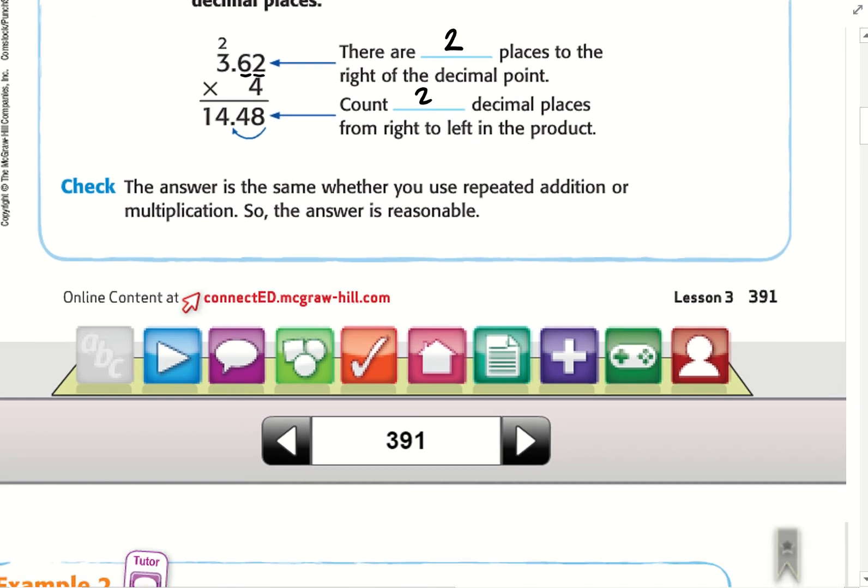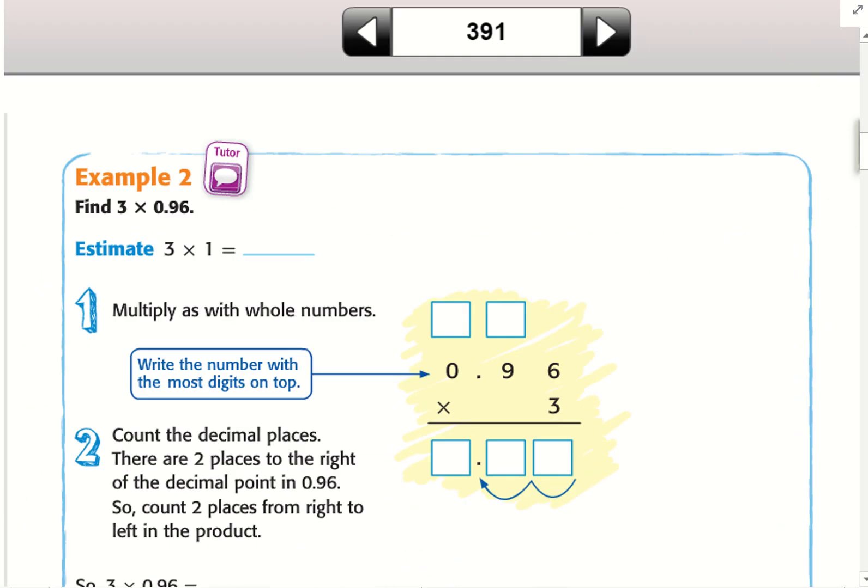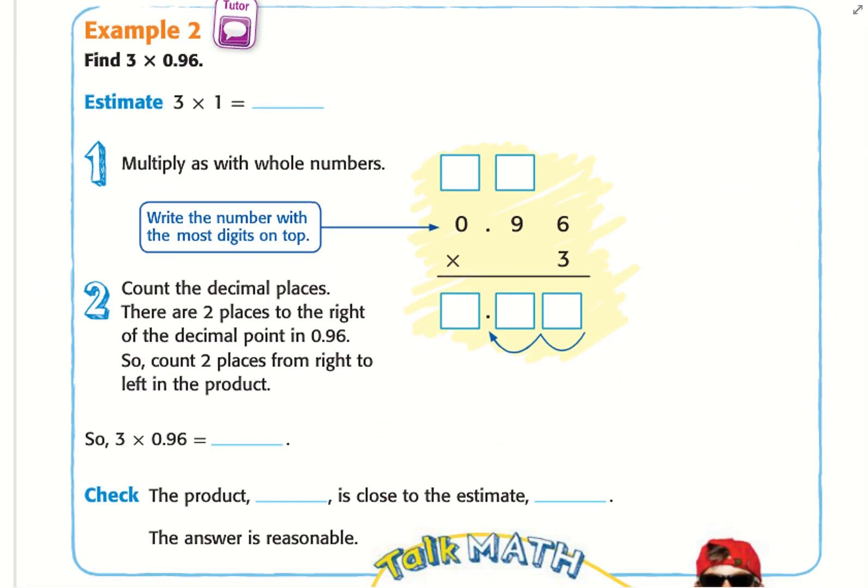My answer is the same as repeated addition, so it's reasonable. Example 2: We have 3 times 0.96. Let's estimate: 3 times 1 equals 3, so our answer should be close to 3.